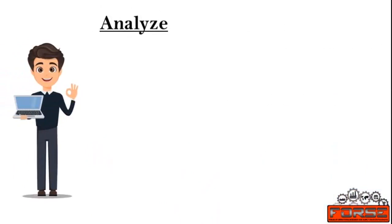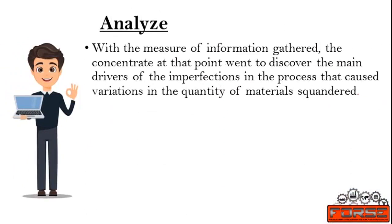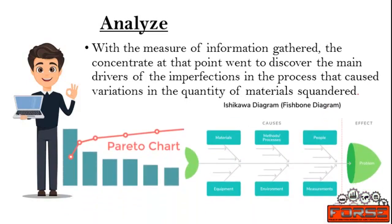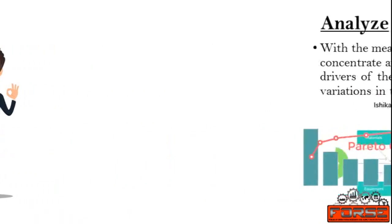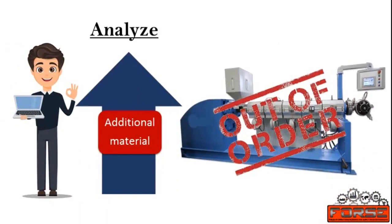He then proceeded to the Analyze phase. With the data gathered, the focus then went to discovering the root causes of the defects in the process that caused variations in the quantity of material wasted. Mr. Smith utilized the Ishikawa diagram to discover the cause-and-effect connections between different activities and inputs to the process, and the issue of generating unused material. He then used a Pareto chart to prioritize which potential causes appeared to have the most negative impact. He found that one machine in the sidewall extrusion process was not performing as well as the others, leading to a notable increase in extra material. In the tread extrusion process, he found that the method of feeding the machines was causing issues with machine stoppage and jamming.